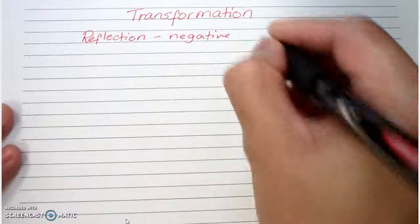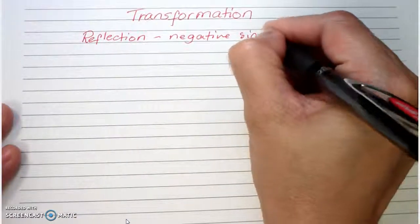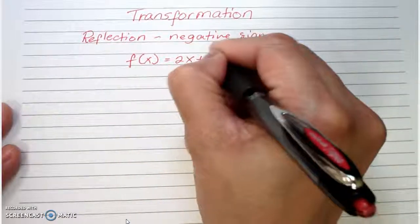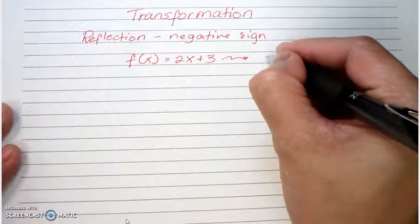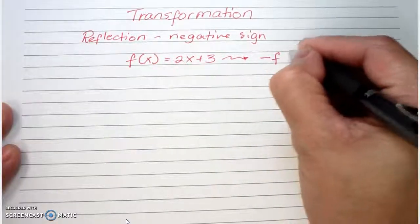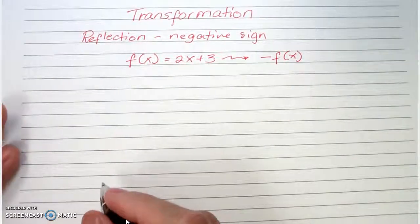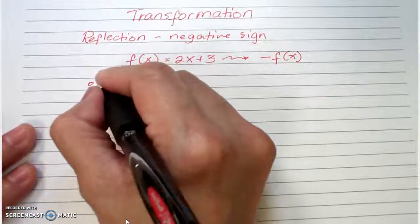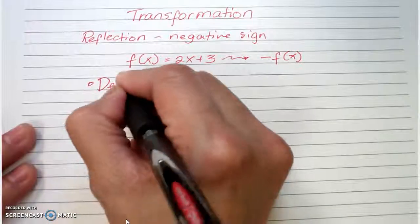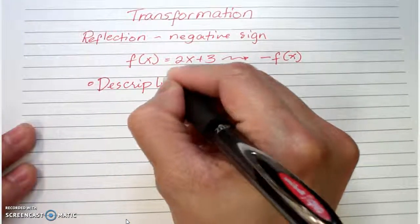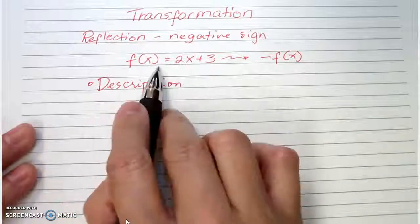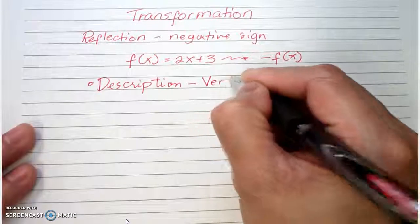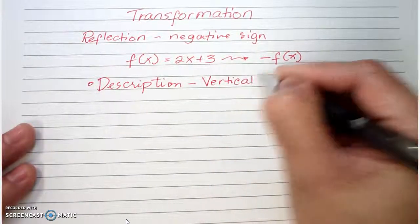As an example, we are going to use f(x) = 2x + 3, and we want to transform it to become negative f(x). The description of this transformation should go like this: this is a vertical reflection.